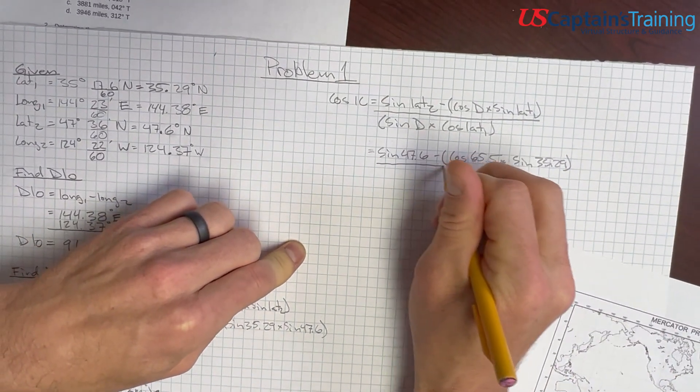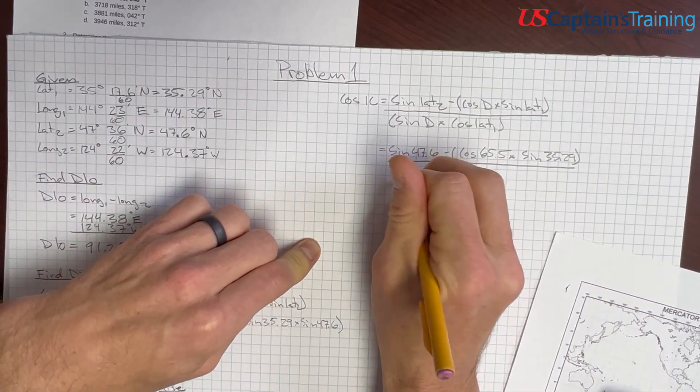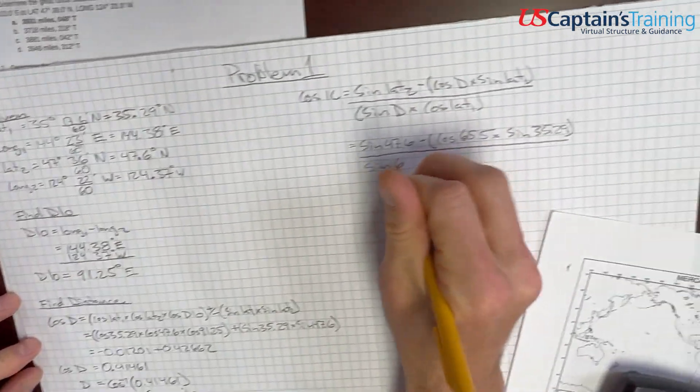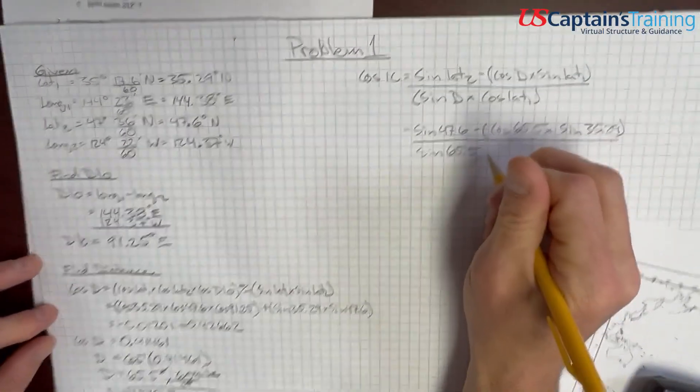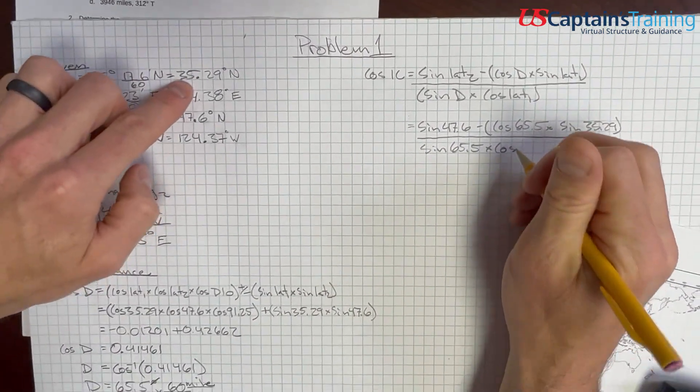And, then all of this is over sine distance, sine distance, which is 65.5, times the cosine of lat 1, which is 35.29. Okay.